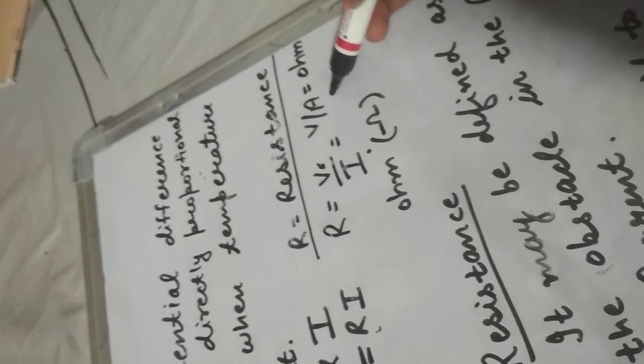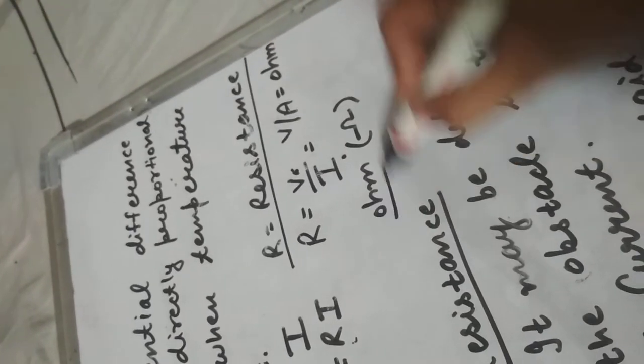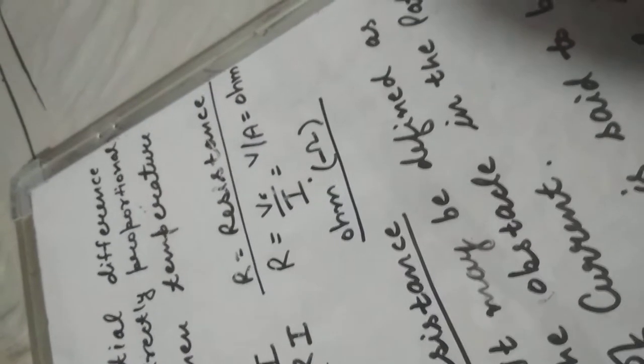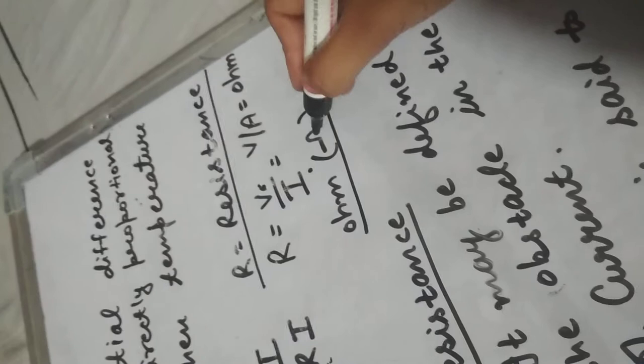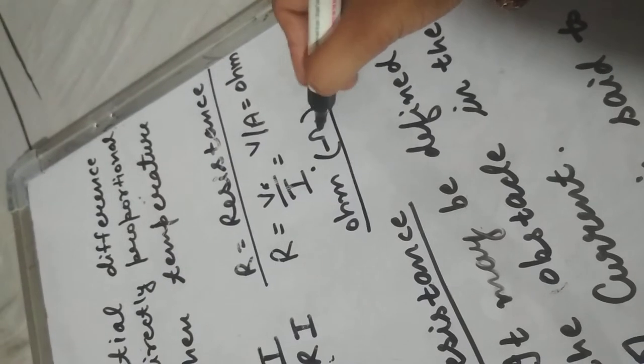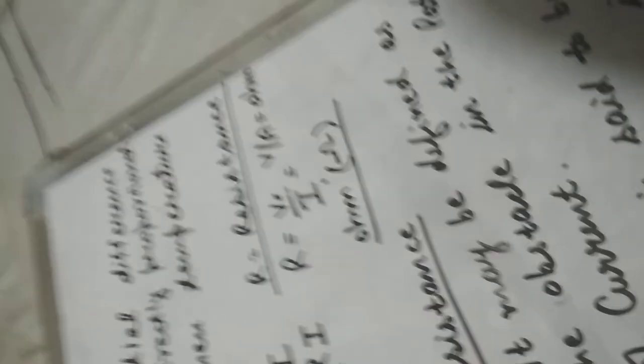And in symbolic form, the unit of resistance is Ohm, written with the symbol Ω.